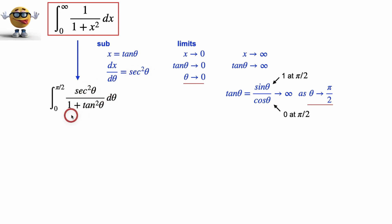Now the next trick is to know that we can invoke a common identity in the denominator. 1 plus tan squared theta equals secant squared theta. So if we plug that in, check this out, secant squared theta over secant squared theta. We cancel them.